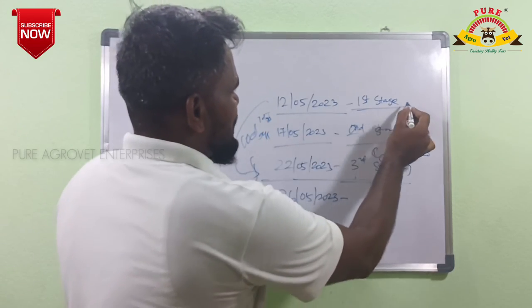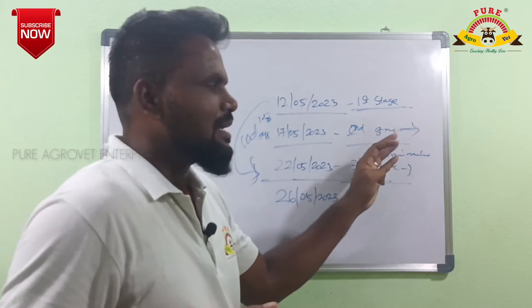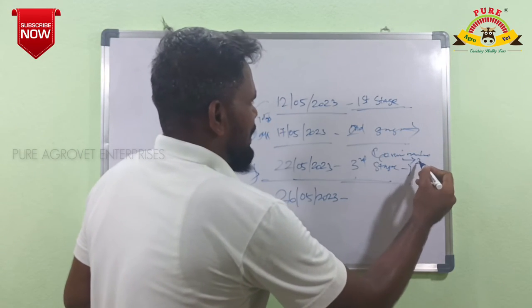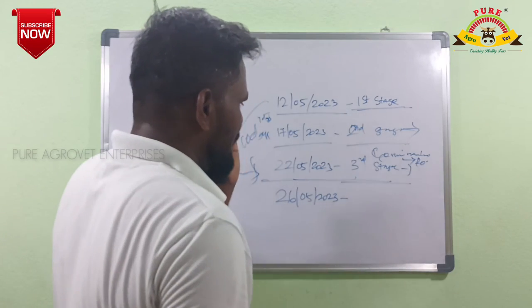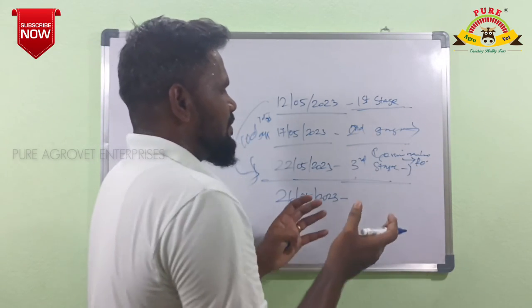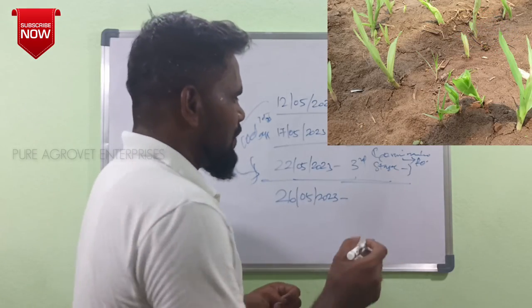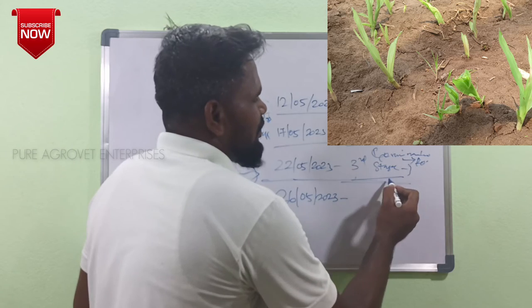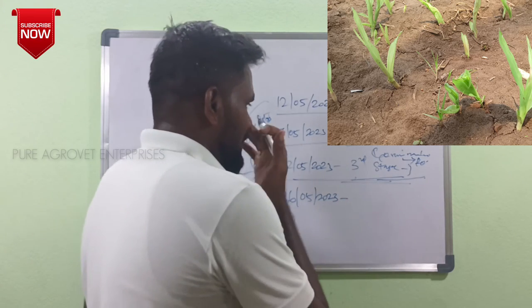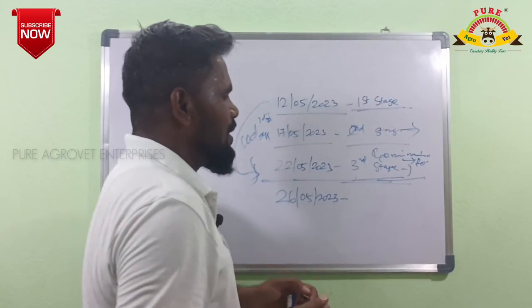In the second stage, we got a lot of greenish growth. That is a great stage. In the second stage, there is a down feeling. That is number 3.